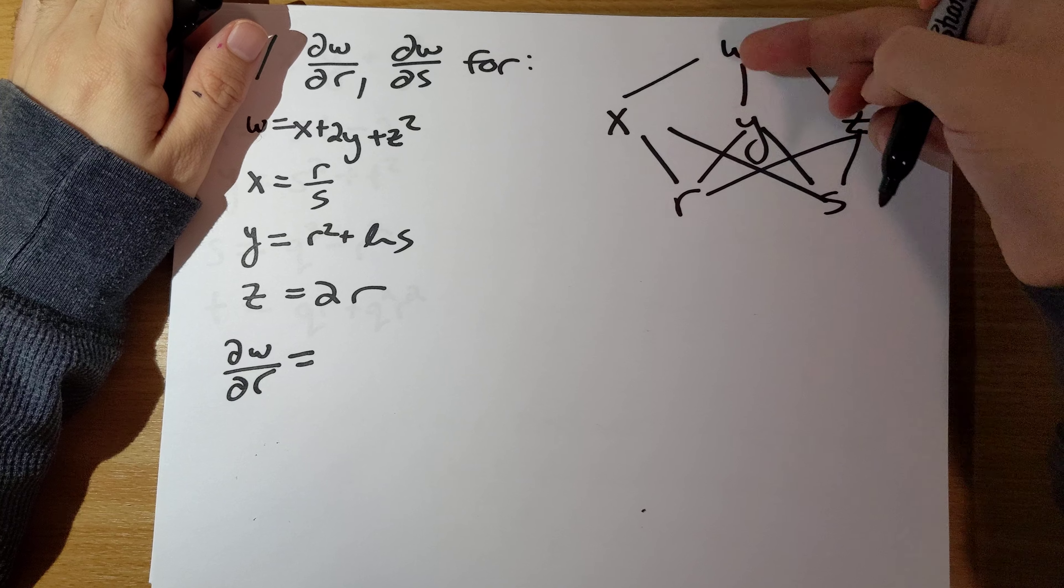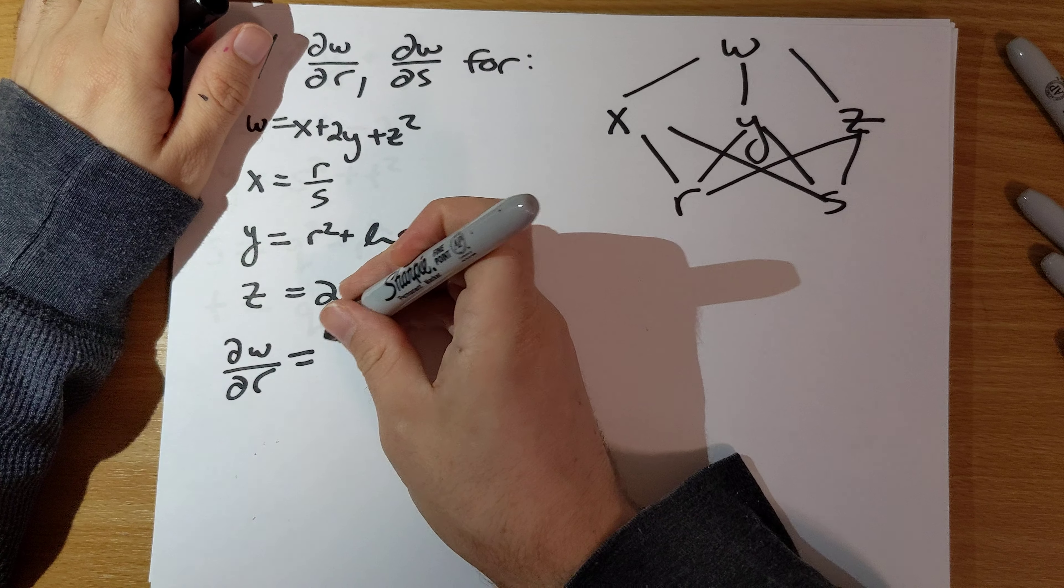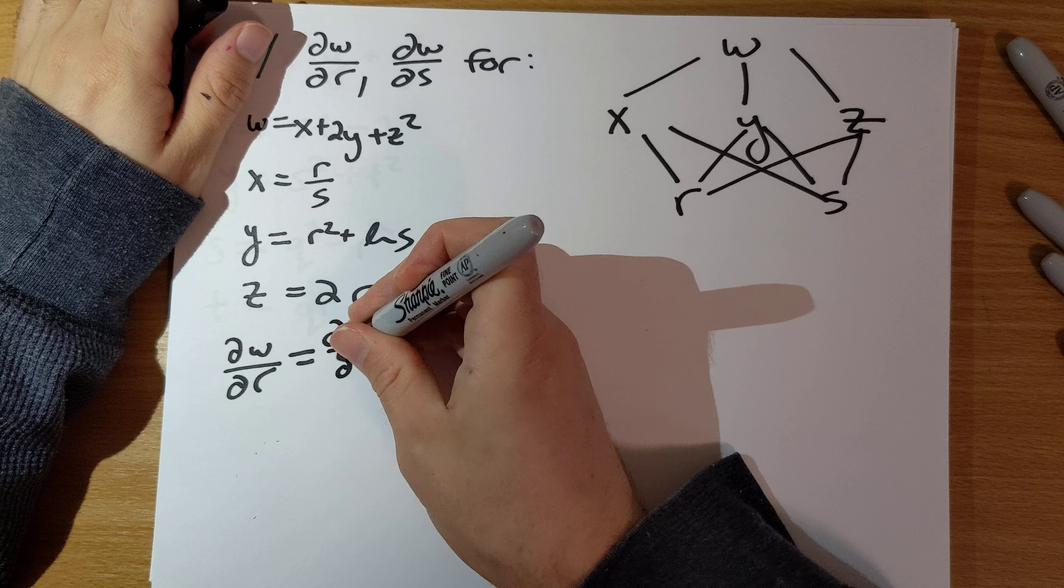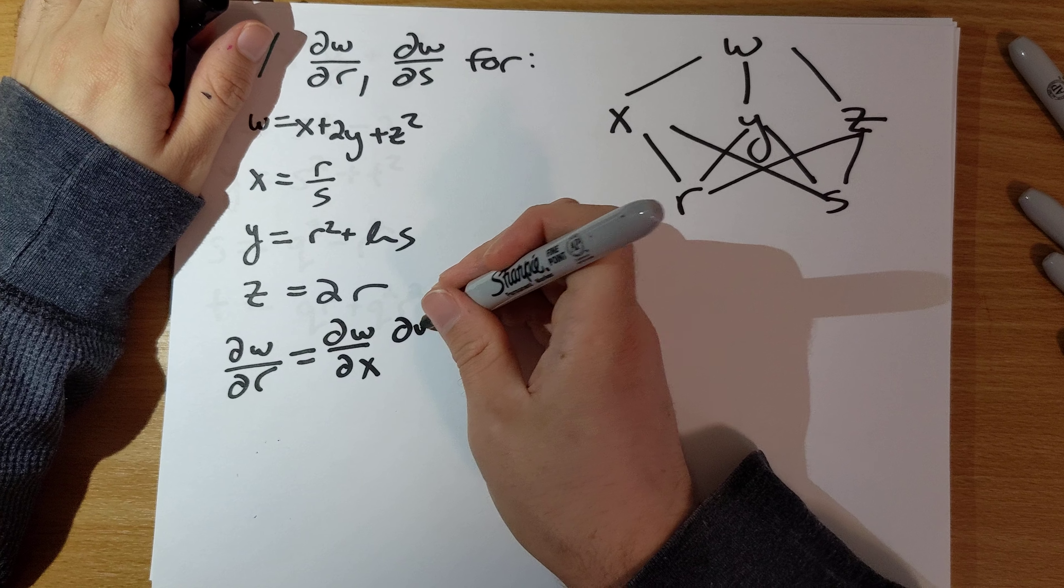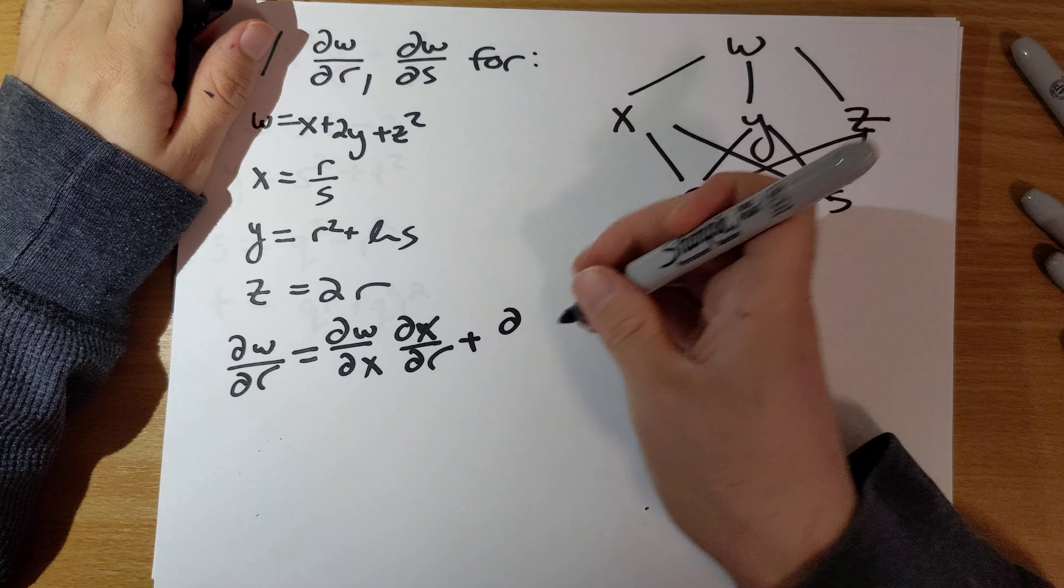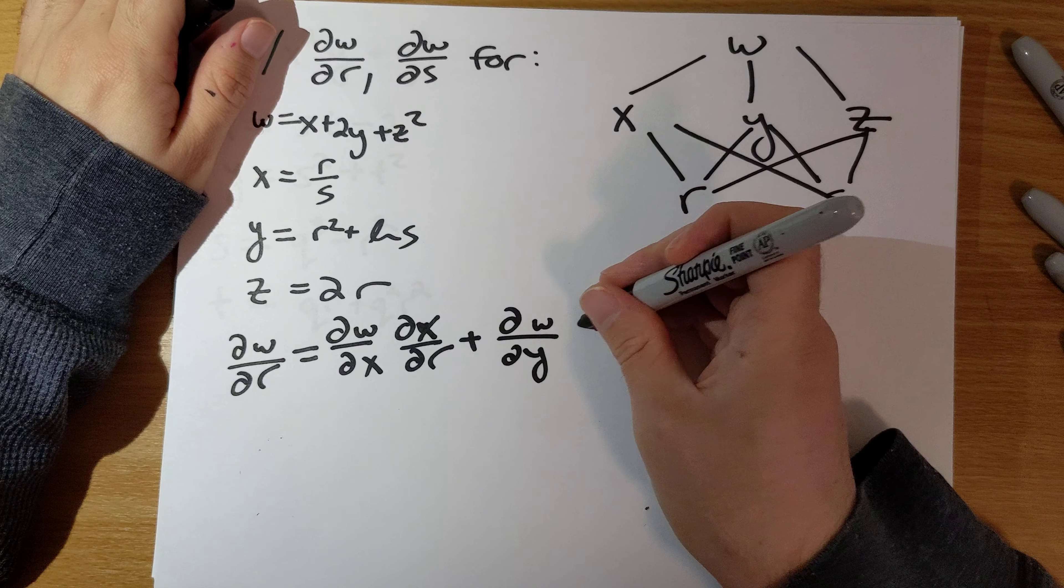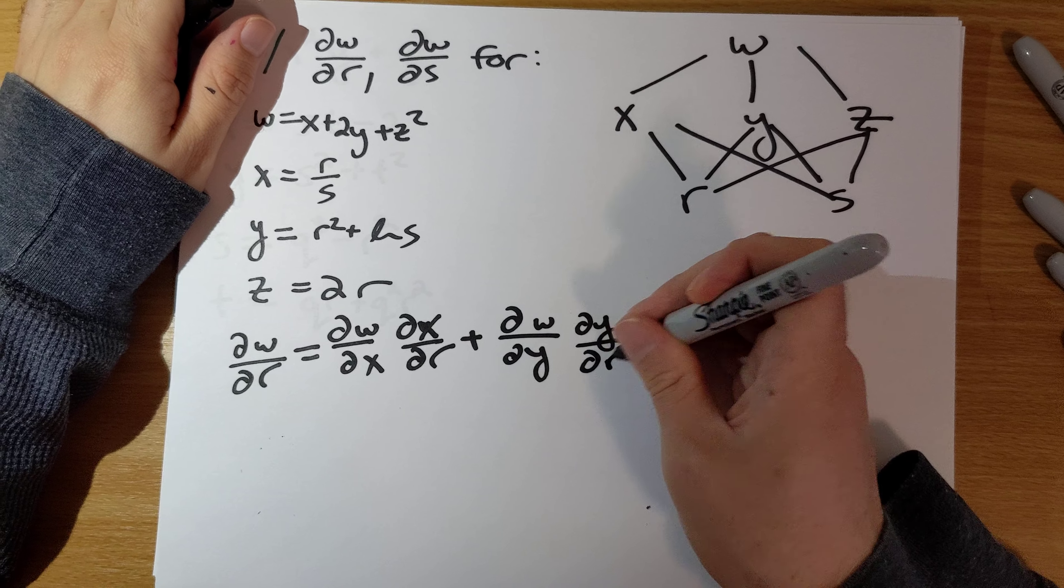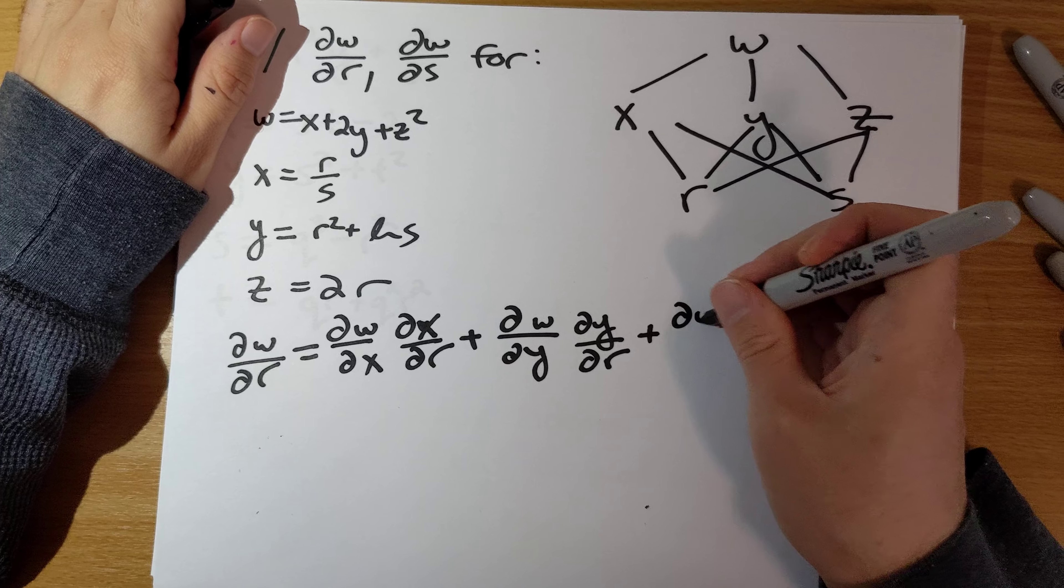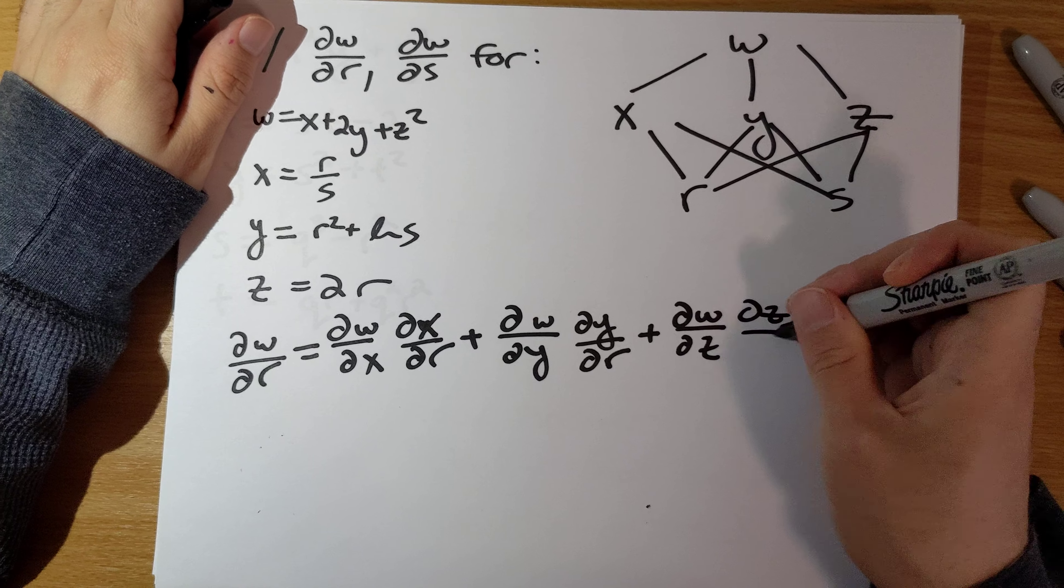We can go W to X to R, W to Y to R, and W to Z to R. So partial W partial X times partial X partial R plus partial W partial Y times partial Y partial R plus partial W partial Z times partial Z partial R.